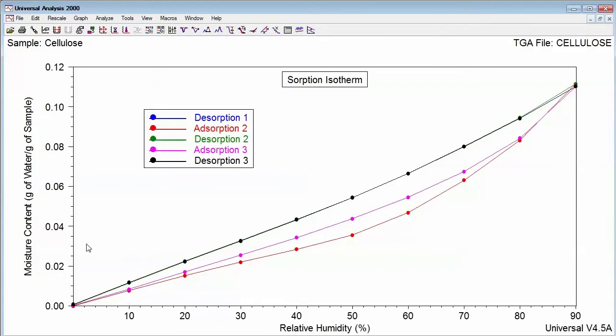As you can see, the new plot has a y-axis signal of moisture content versus relative humidity. The first and second sorption cycles, as well as the two desorption steps, are being displayed.